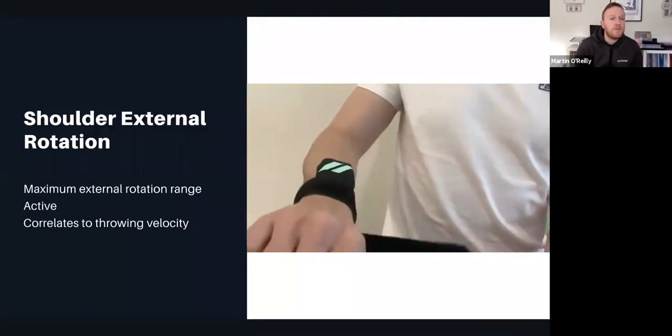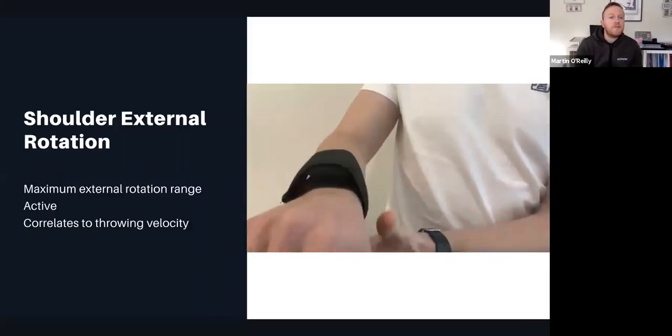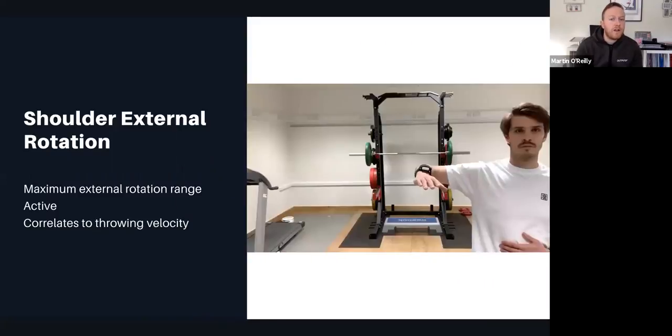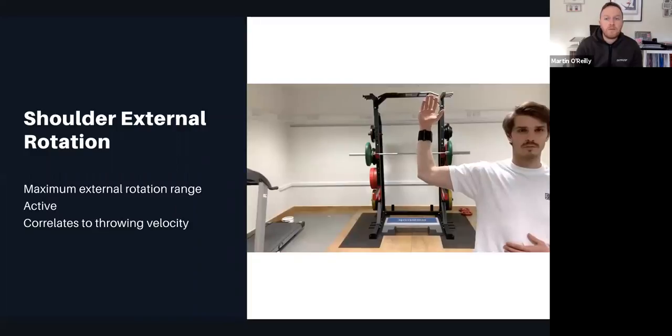The first fitness test we completed was shoulder external rotation. This very commonly relates to throwing velocity along with a number of other upper limb assessments.